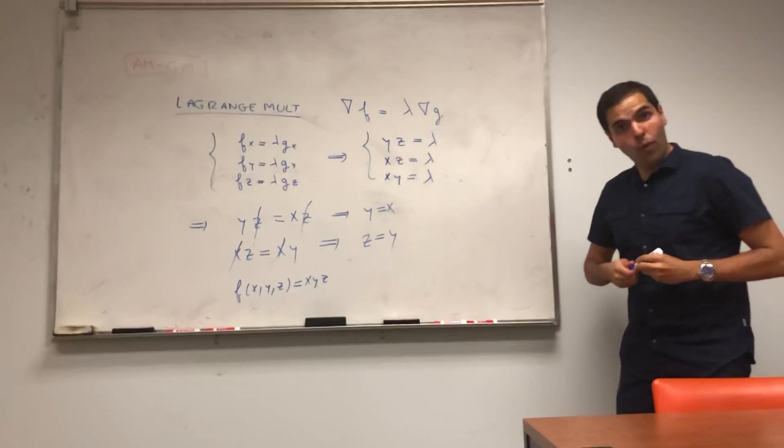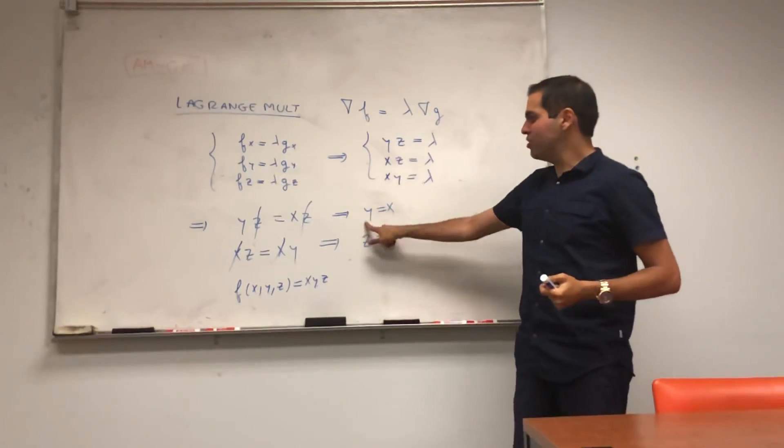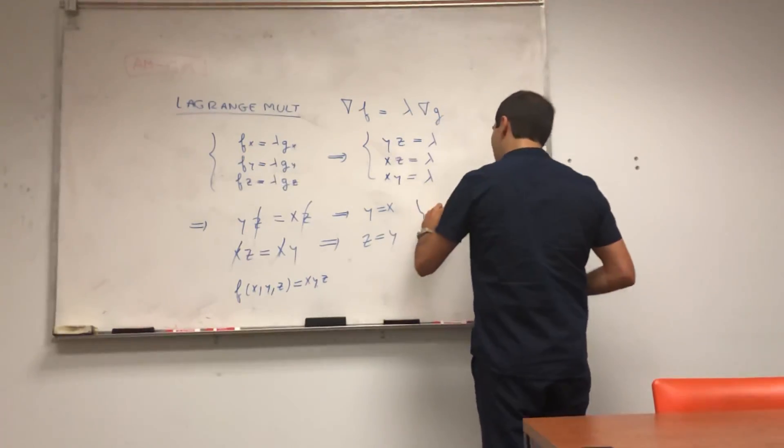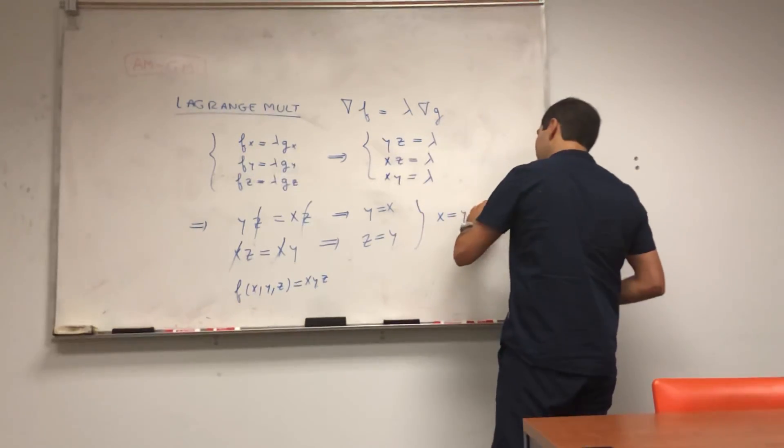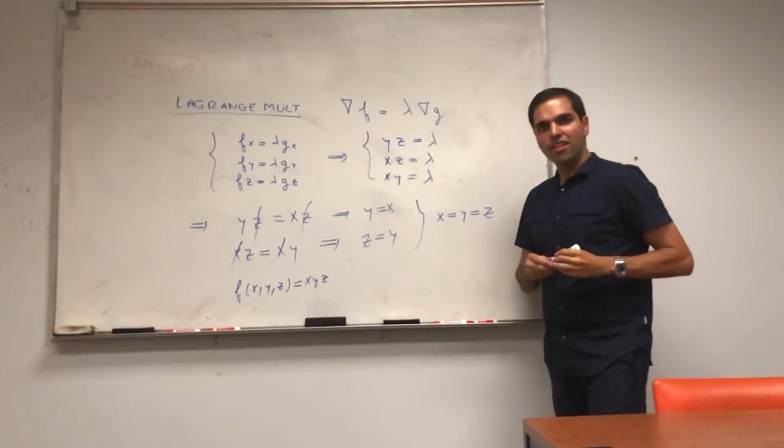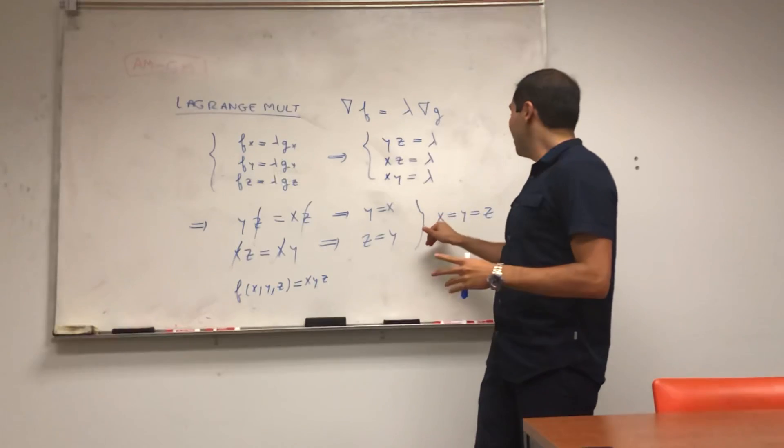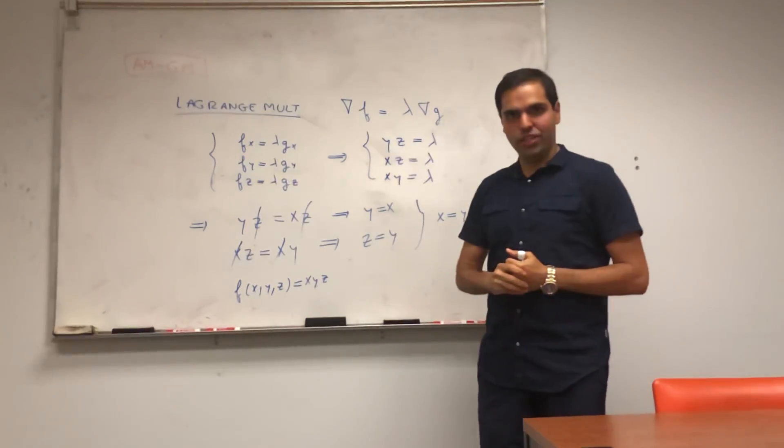And lo and behold, what do we have? We have that x equals to y, and y equals to z. So in fact, x equals to y equals to z. Which tells us, at a maximum, or a minimum, all those three quantities are equal.